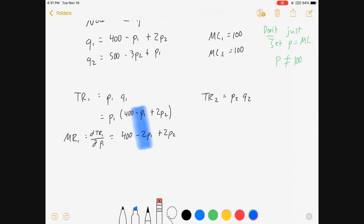Likewise, for firm 2, P2 times Q2 is total revenue, so plug in the demand curve there. Marginal revenue—we double the slope on P2, since that's the price they're choosing—is 500 minus 6P2 plus P1. And there you've got the doubled slopes for the P that they're choosing.